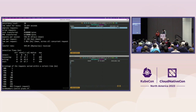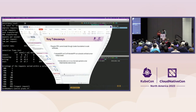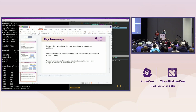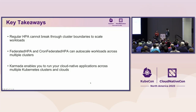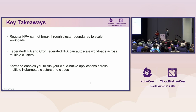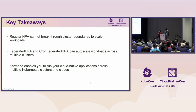That is the end of the demo. Let's move back to our slides for key takeaways. Regular HPA cannot break through cluster boundaries to autoscale workloads, but Federated HPA and CronFederated HPA can help you with that. Karmada is an open source tool that enables you to run cloud-native applications across multiple Kubernetes clusters and clouds. I encourage everyone to give Karmada a try and see how it fits your use case.